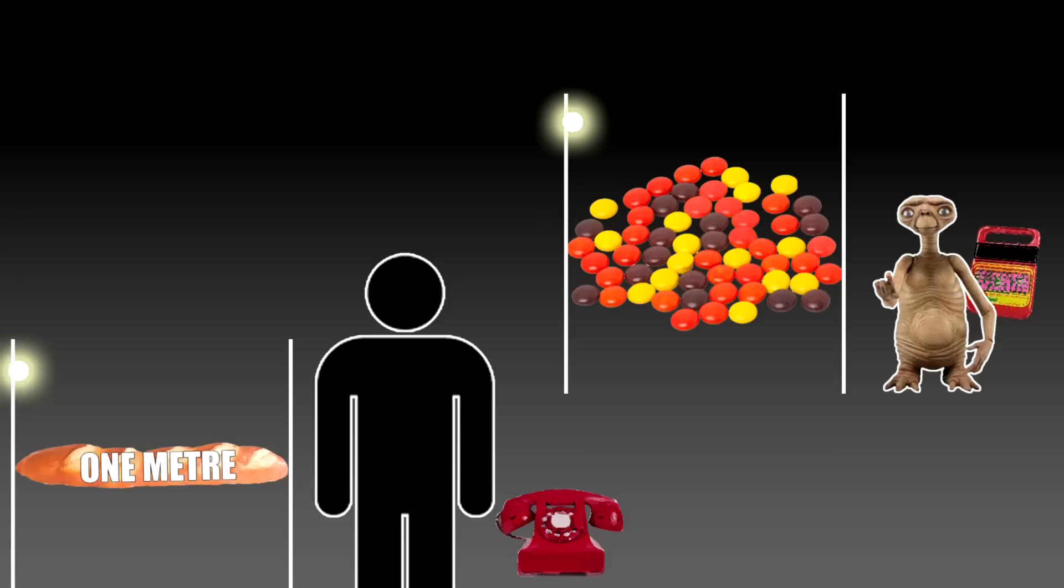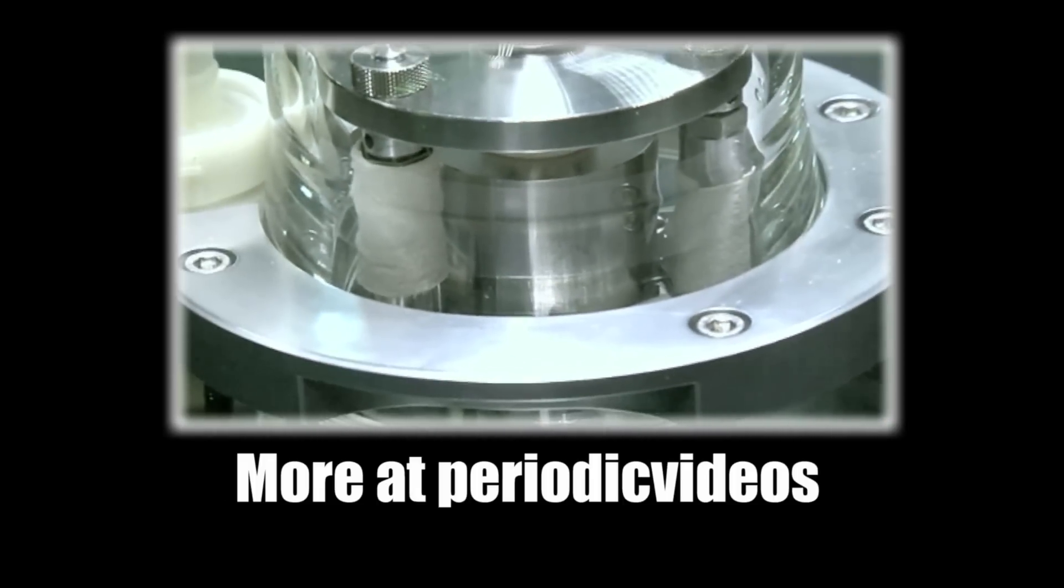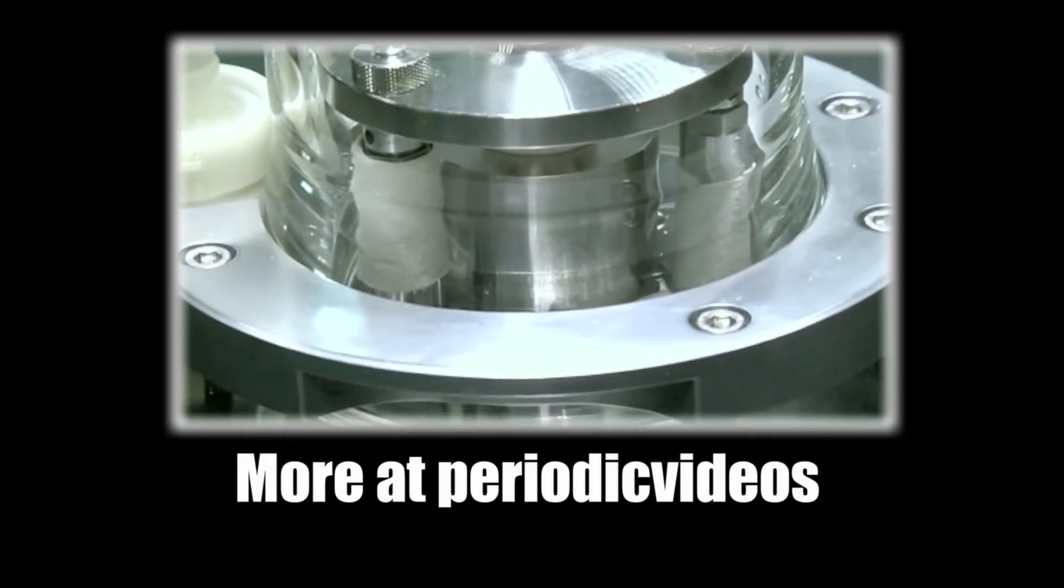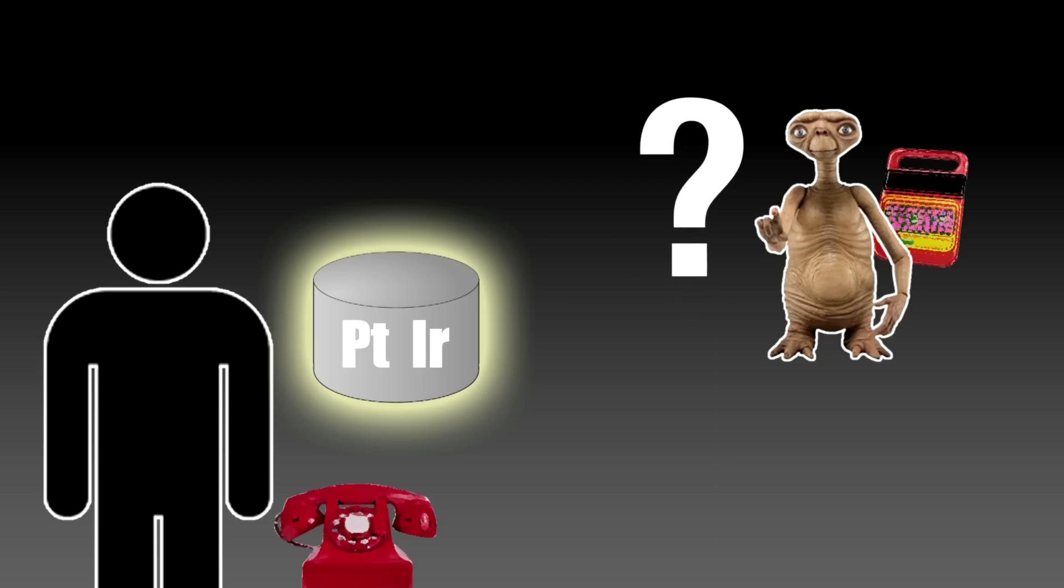For example, if we were to discover life on Alpha Centauri and we wanted to send messages to them about things we've measured, we could actually explain to them what a meter was in terms of something that they could measure, which you couldn't do if it was just a length of a ruler in a bank vault somewhere.